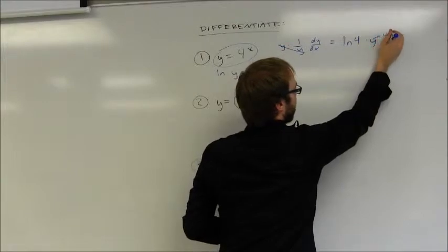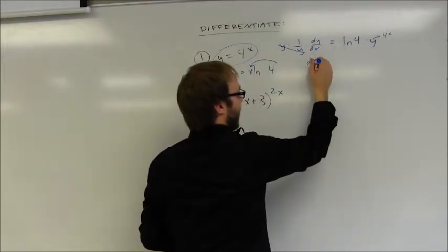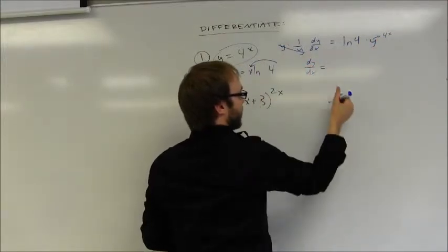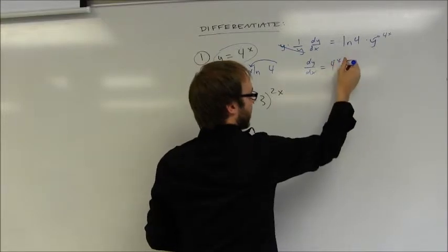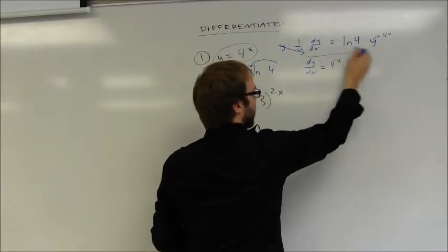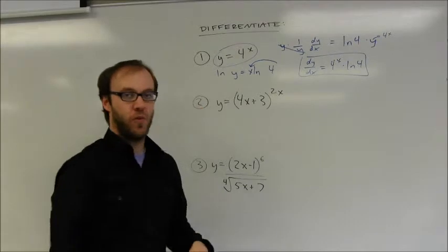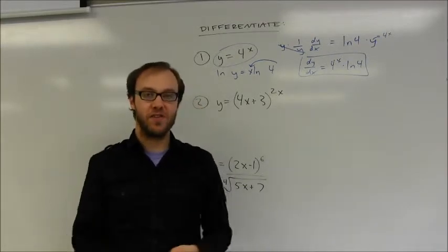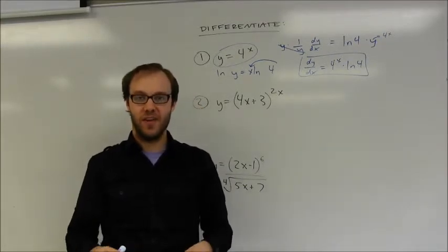I'm going to simplify that in there. And so dy dx is equal to 4 to the x times the natural log of 4. So technically just multiplying by the natural log of the base and you'll have your derivative.